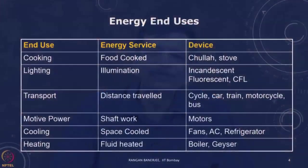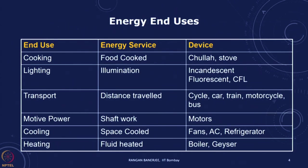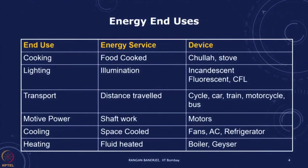When we talk about all the end uses, we think of all the things that you do in your daily life. For cooking, the energy service is the food cooked — you have the chula, the stove, or the microwave oven. For lighting, the energy service is illumination — you have incandescent bulbs, fluorescent, compact fluorescent, and now LED. For transport, we are looking at passengers or goods being transported, and you have a whole host: cycle, car, train, motorcycle, bus, aircraft — each one is an energy system with a conversion and an efficiency.